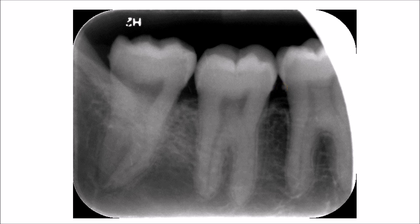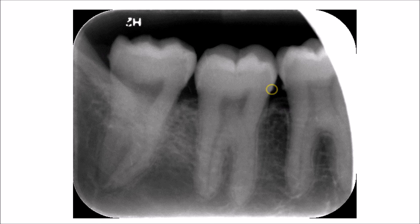This leads to calcification of debris and plaque, which subsequently results in calculus formation. As you can see in this area, there is an ongoing process of periodontal disease that has already started due to improper oral hygiene and failure to remove food deposits, which collect and gather more factors that promote the periodontal process.